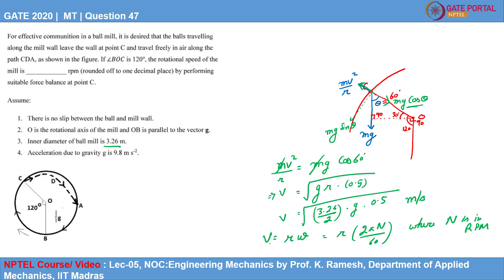Upon putting the values from this equation, we can find the value of N. So N will be V into 60 upon 2 pi R.